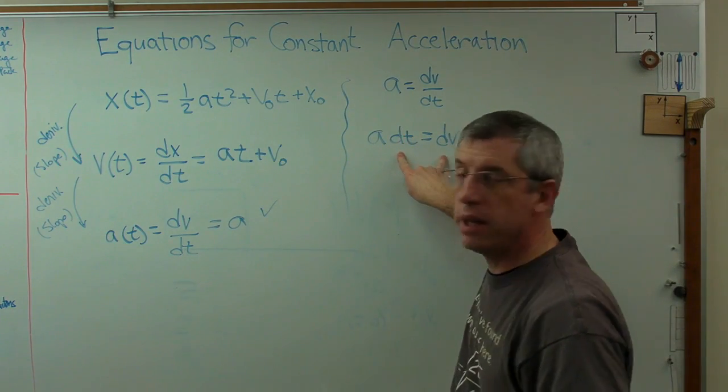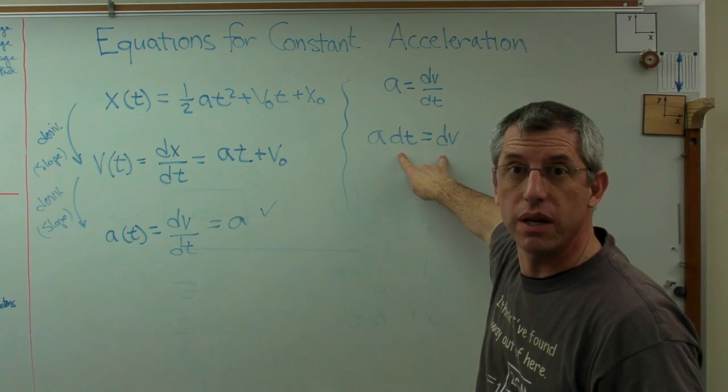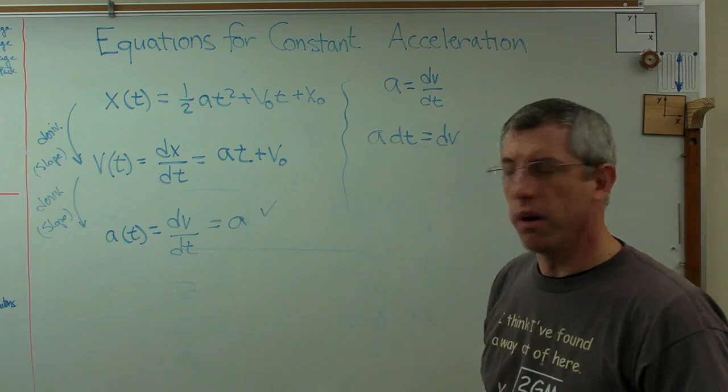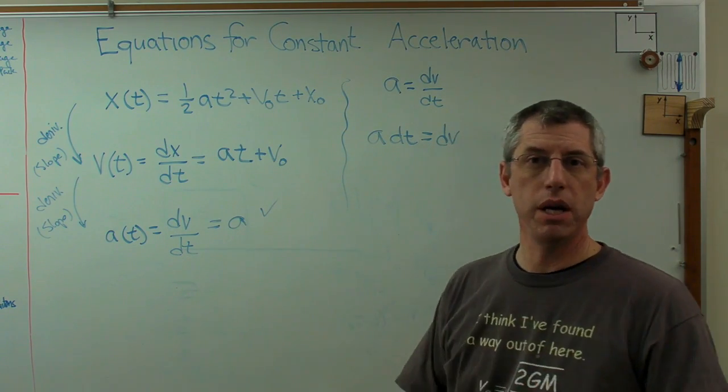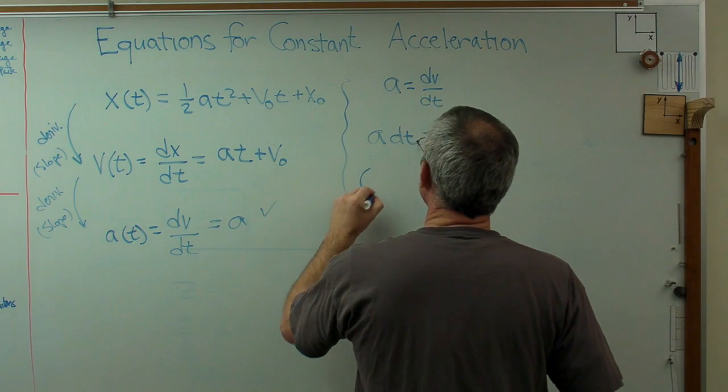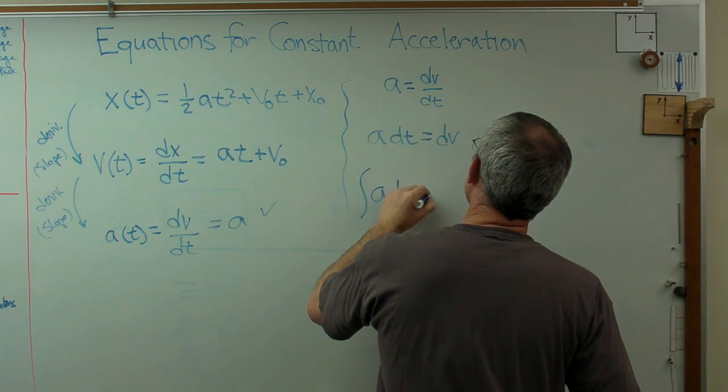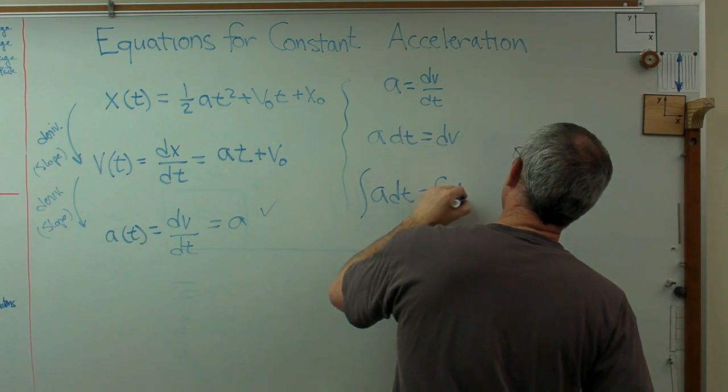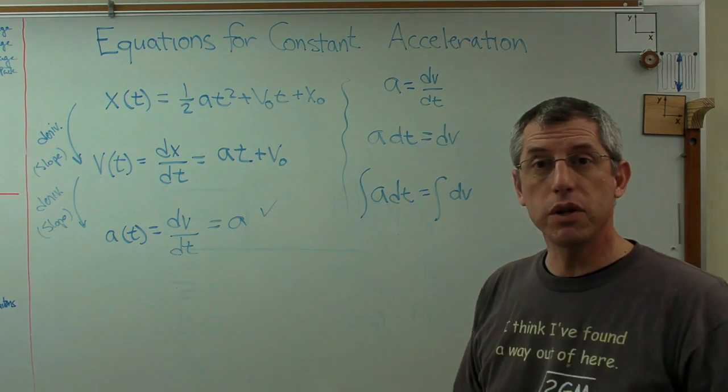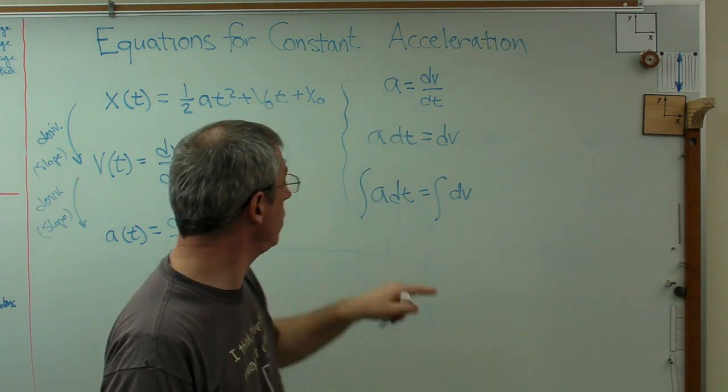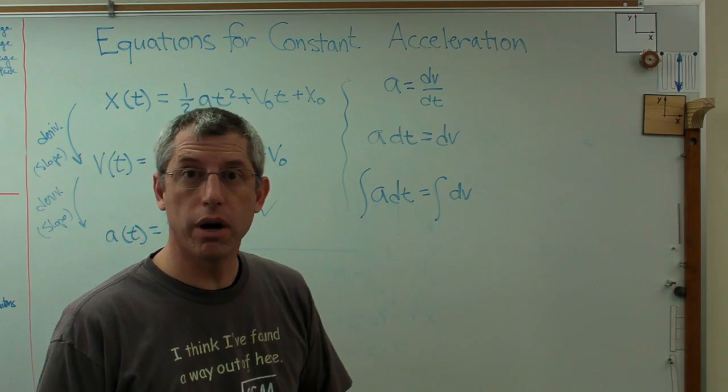Well I don't want those in there anymore. I want t's and v's, not dt's and dv's. How do you make a dt and a dv go away? You integrate. So what I'm going to do is the integral of a dt equals the integral of dv. As long as I do the same thing to both sides of the equation, it's still an equation.